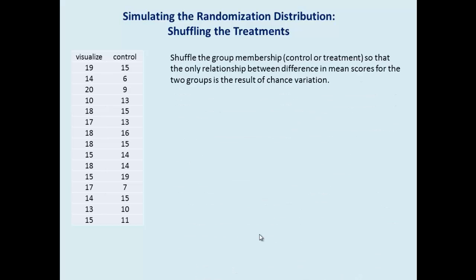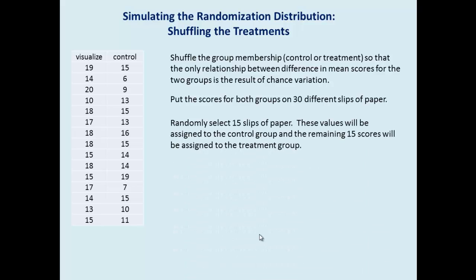Simulating the randomization distribution. To do this, we'll shuffle the group membership, control or treatment, so that the only relationship between difference and mean scores for the two groups would be the result of chance variation. We'll put the scores for both groups on 30 different slips of paper. We'll randomly select 15 slips of paper. These values will be assigned to the control group, and the remaining 15 scores will be assigned to the treatment group.